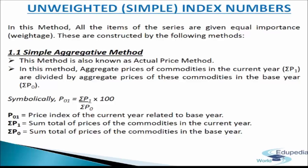The simple aggregative method is also known as the actual price method. It is a simple method to construct index numbers. In this method, aggregate prices of commodities in the current year, i.e. Sigma P1, are divided by aggregate prices in the base year, i.e. Sigma P0, and expressed as a percentage. Symbolically: P01 = (Sigma P1 / Sigma P0) × 100.